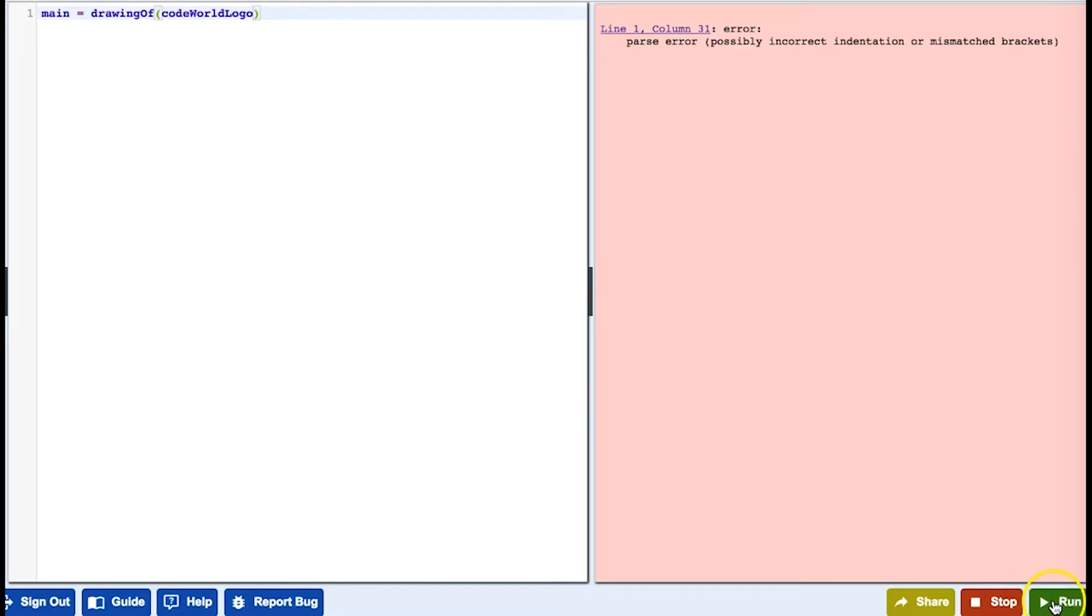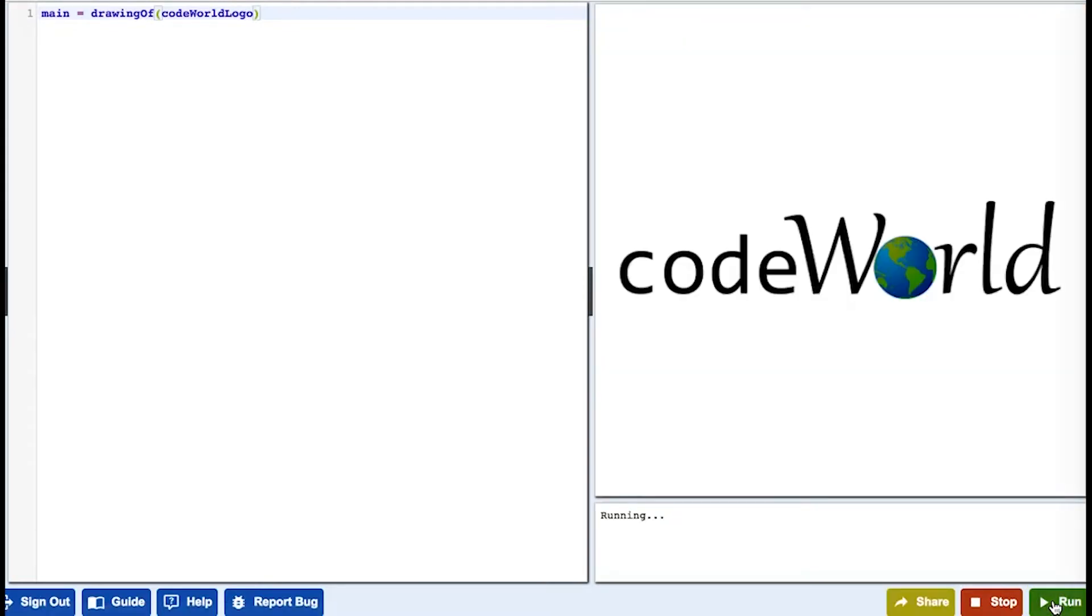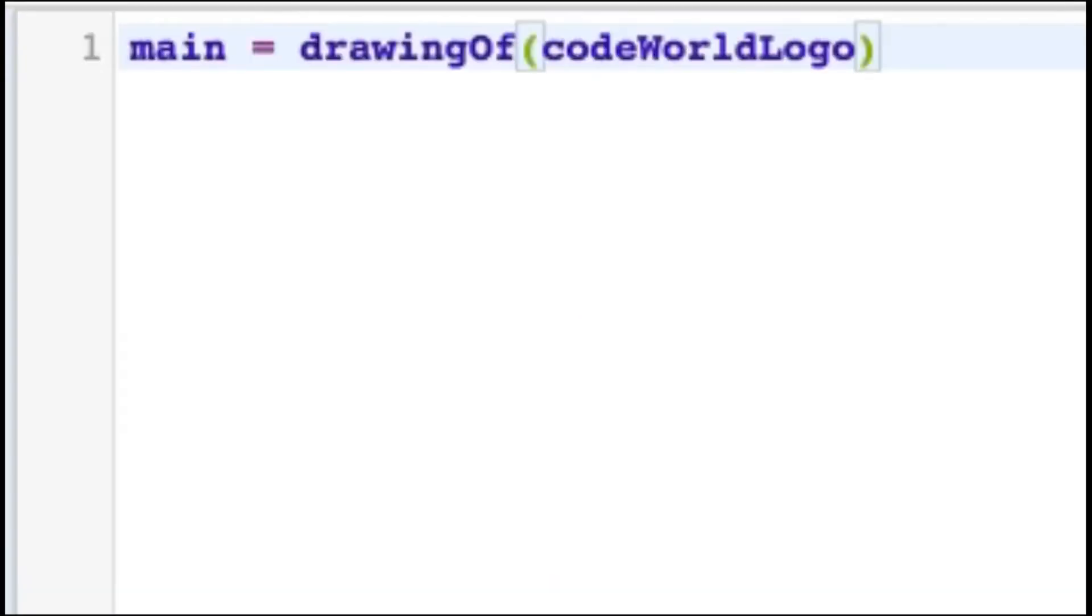Now you've just run your first program and you are officially an engineer. Let's understand what the program is saying now. All coding starts by opening your program. In code world, the starting point for all programs is main equals. When you type main equals drawing of, you've told the computer that the main thing you are going to do is write a program, and that the program will be a drawing. The equal sign means is, just like in math.